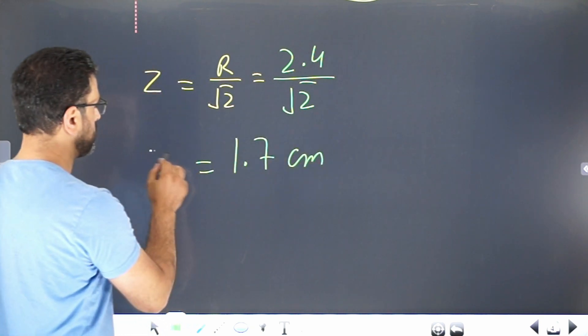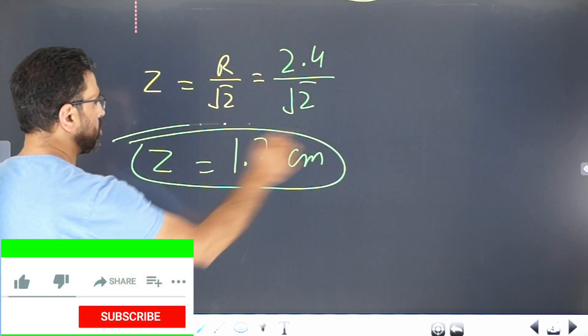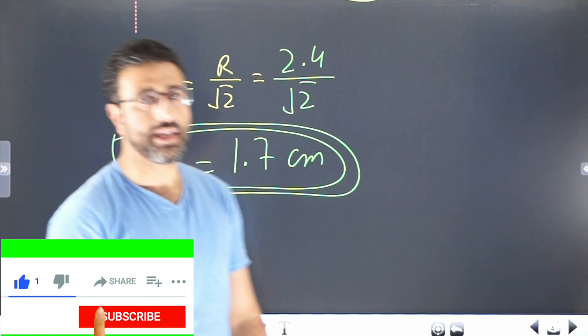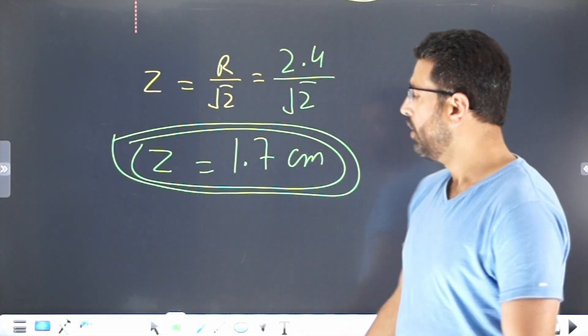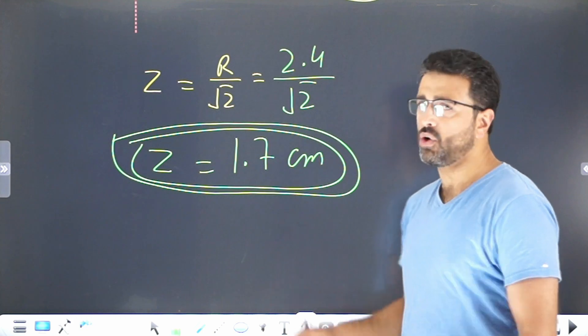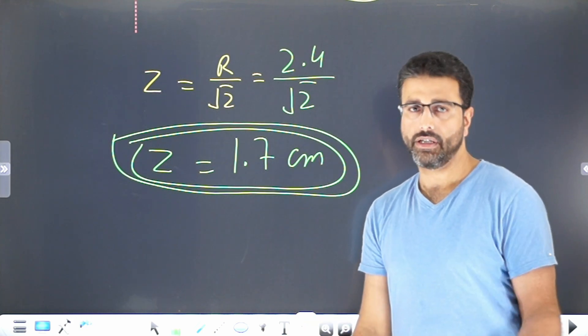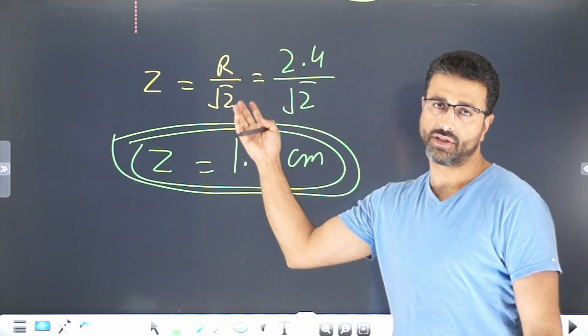That's 1.7 cm. At a distance of 1.7 cm from the ring, field will be maximum. And this maximum field does not depend on the charge of the ring, it just depends on the radius of the ring.